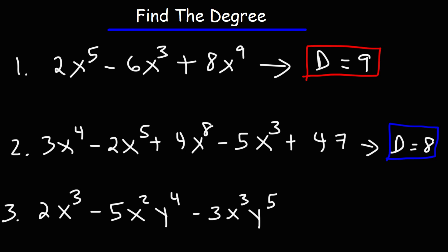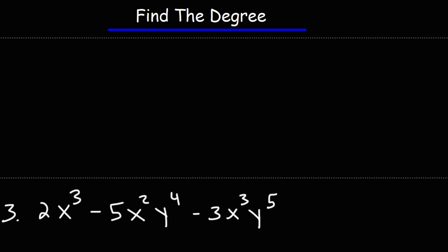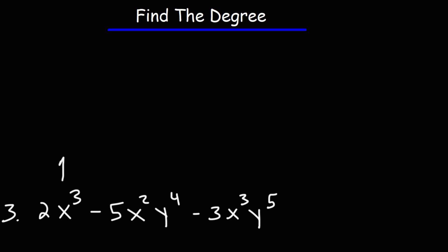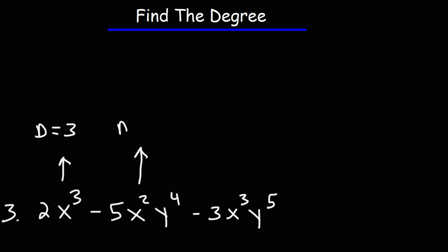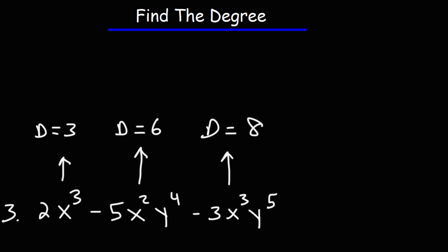Now what about polynomials with multiple variables? In this case, you need to add the exponents. The first term has a degree of 3. The second term has x squared and y to the fourth — 2 plus 4 is 6, so that term has a degree of 6. For the last one, 3 plus 5 is 8, and so that's the highest degree. Our final answer is degree 8.